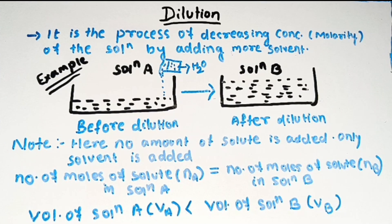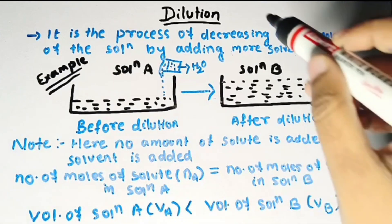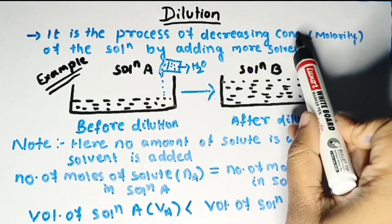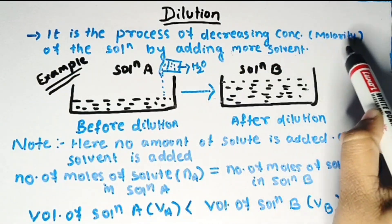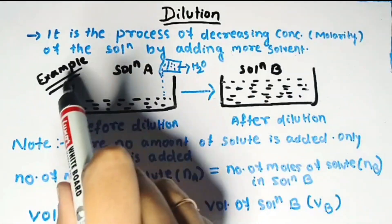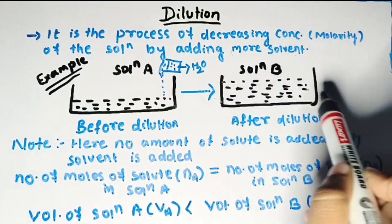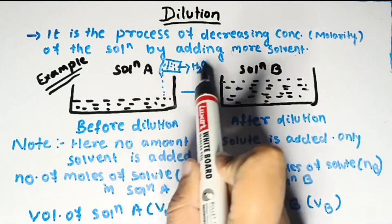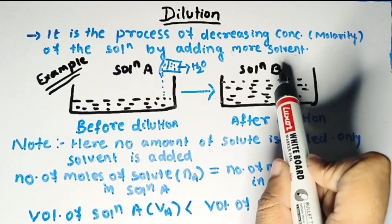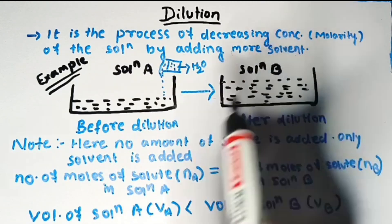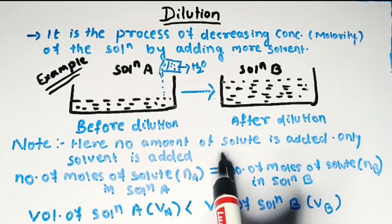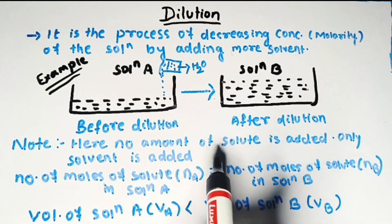To solve molarity based questions we should know another concept: dilution. Dilution is the process of decreasing the concentration — in this case molarity — of the solution by adding more solvent. This can be understood by taking this example: in solution A, water (solvent) is added, and as a result solution A gets converted to solution B.